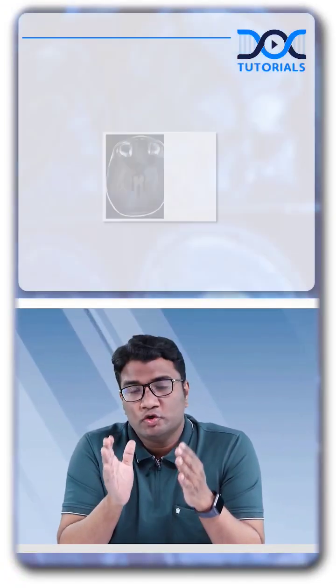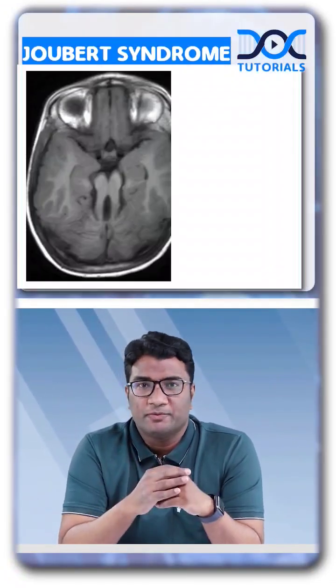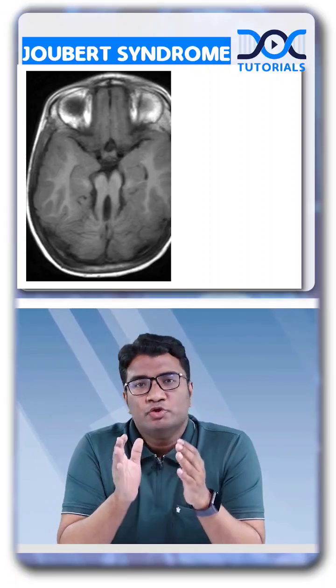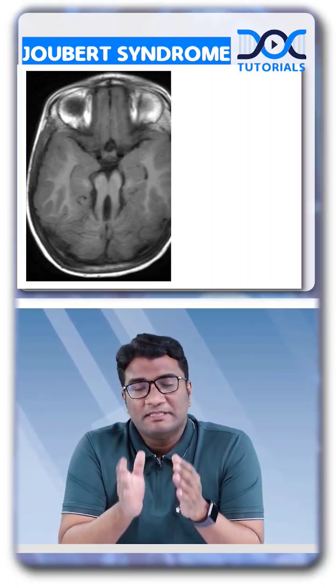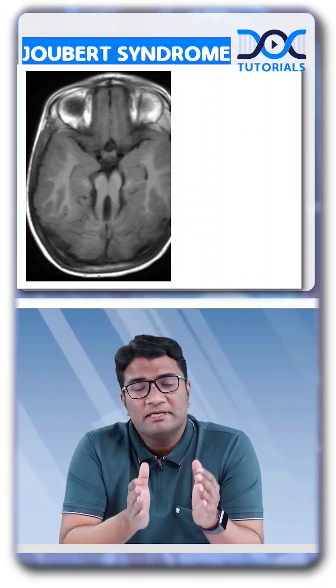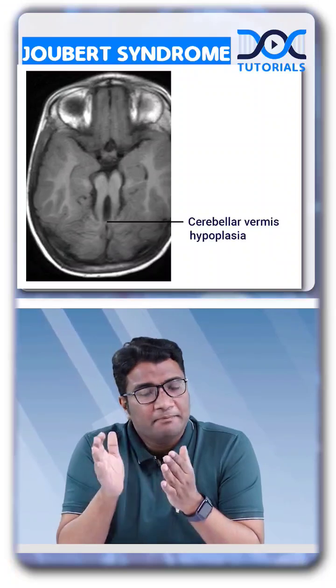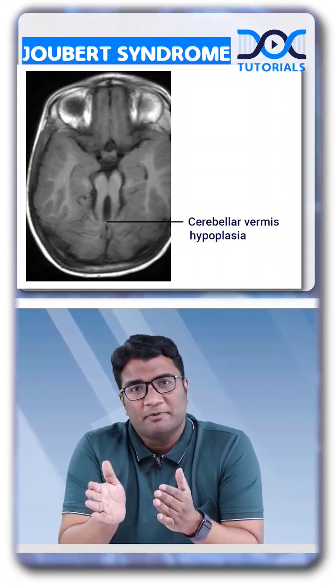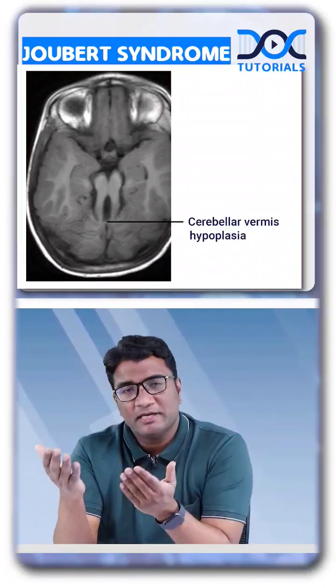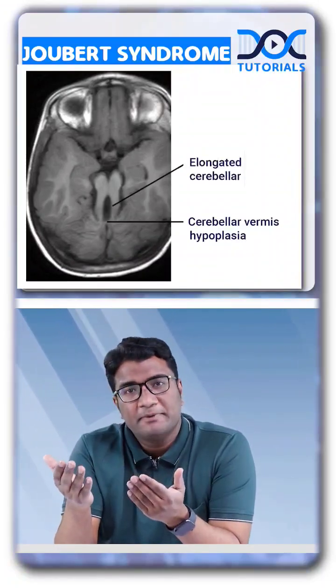Hello friends, welcome to another radiology quick learning bite. In this quick learning bite, we'll learn about Joubert syndrome. Joubert syndrome is a condition where we have vermis hypoplasia, and because of the vermis hypoplasia the superior cerebellar peduncles will appear elongated.